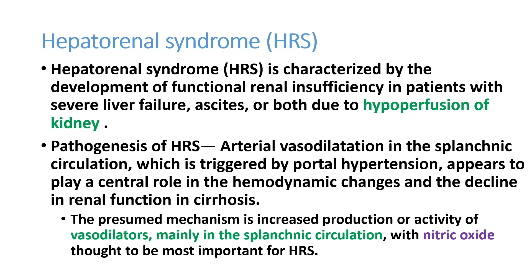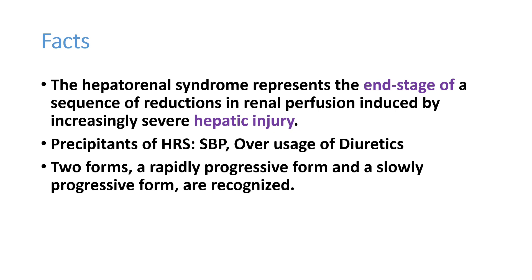This vasodilation in the splanchnic circulation is mainly due to nitric oxide production in chronic liver disease — that is the major pathological problem in hepatorenal syndrome. Hypoperfusion of the kidney is the major problem, producing functional defects in the kidney, but it will not produce any structural damage to the kidneys.